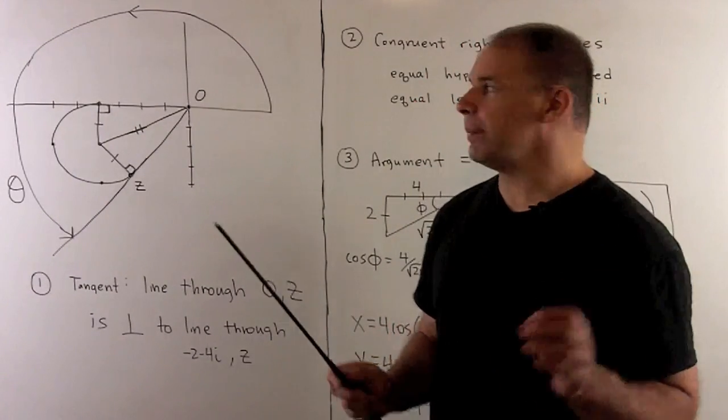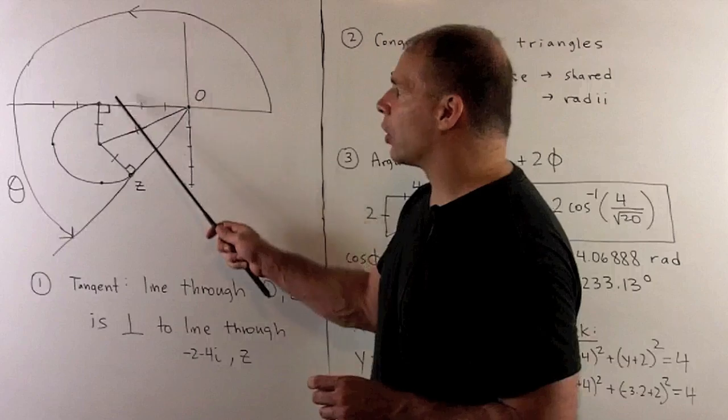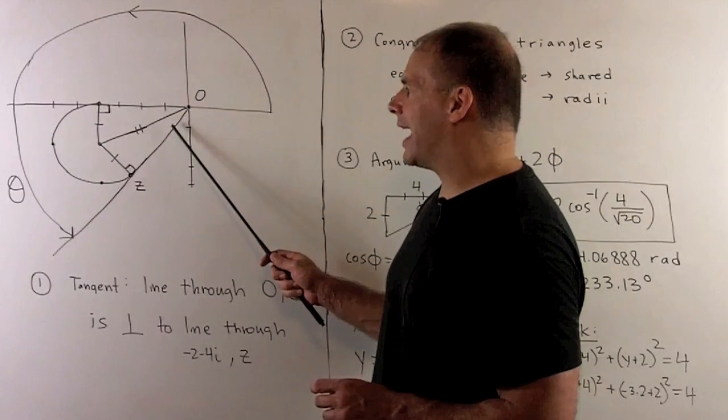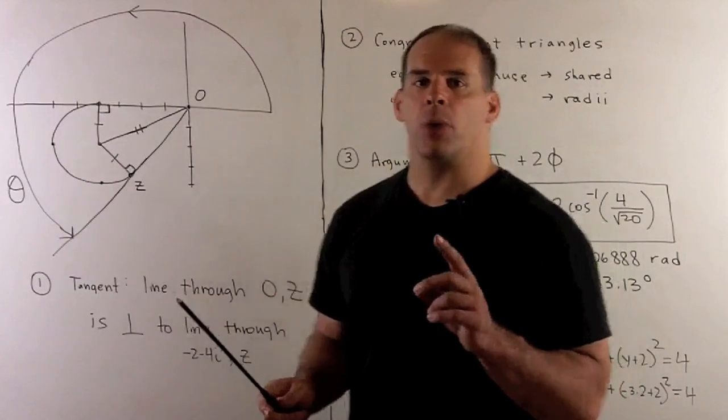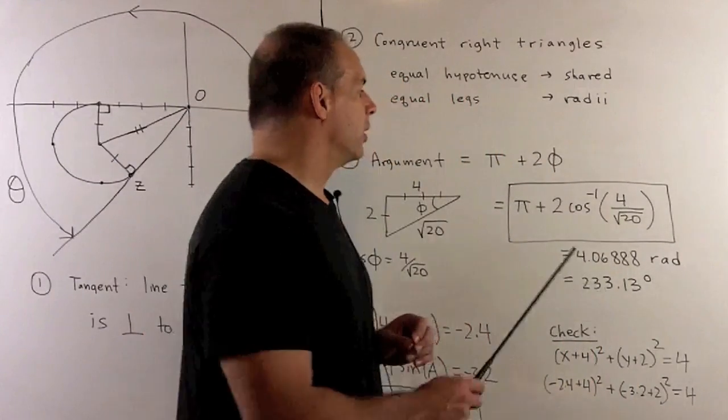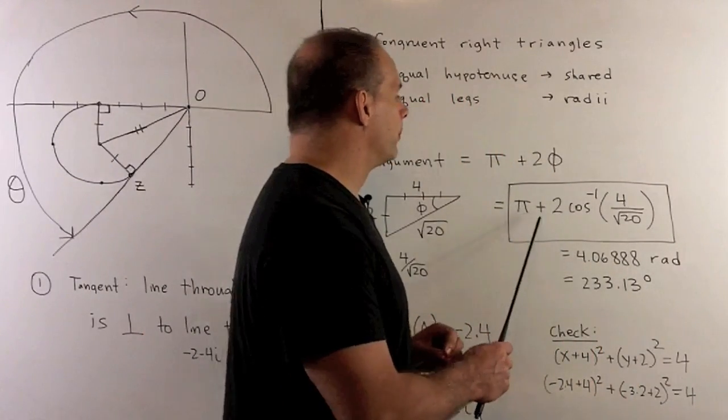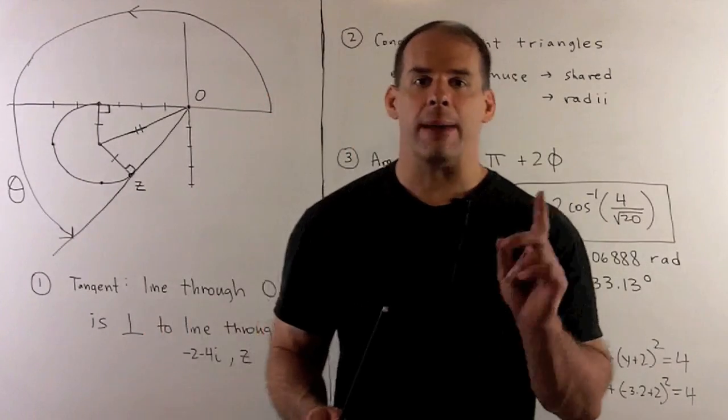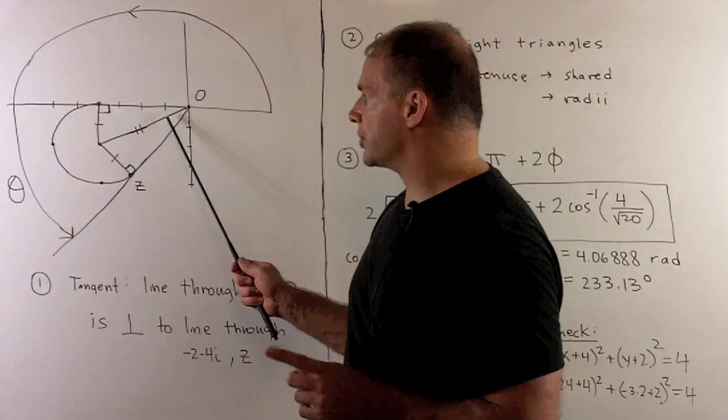So, I have two congruent right triangles, which means, if I want the largest argument, we take pi, or 180 degrees, I add this angle here, and then I add this angle here, but these are equal. So, we're going to use pi plus twice that angle.